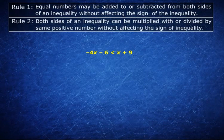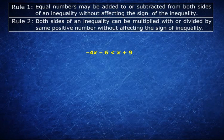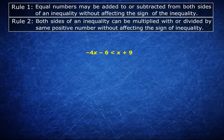Equal numbers may be added to or subtracted from both sides of an inequality without affecting the sign of the inequality. Also both sides of an inequality can be multiplied with or divided by the same positive number and this does not affect the sign of the inequality.